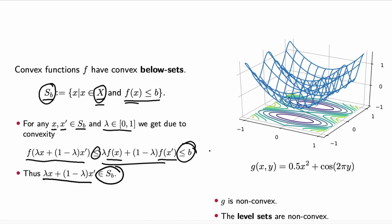In this example, we have a non-convex function. We see the below-sets for different values of B, where the darker the color, the smaller the value of B.